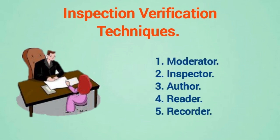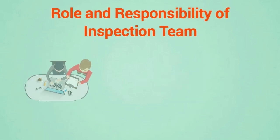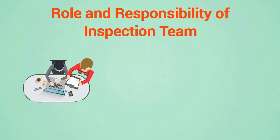The five roles in an inspection are: first, moderator; second, inspector; third, author; fourth, reader; fifth, recorder. Now we will understand all inspection team roles one by one.